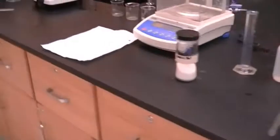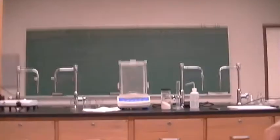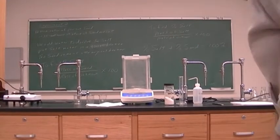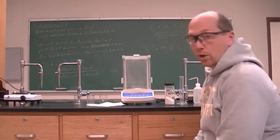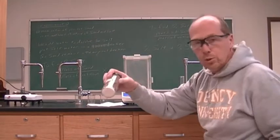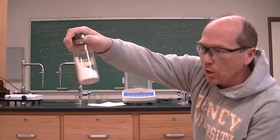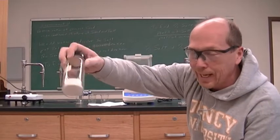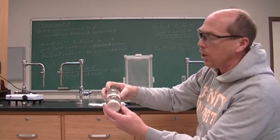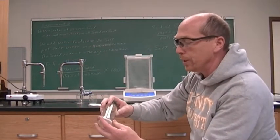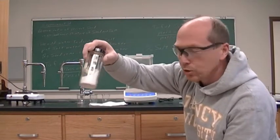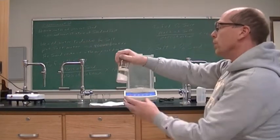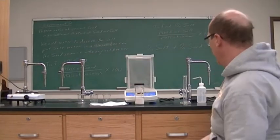We are going to begin our experiment. We have our sand-salt unknown. You can visually look at it — the salt is white and the sand is also white, so it is very hard to determine if there's more sand or salt. We are going to have to calculate it.